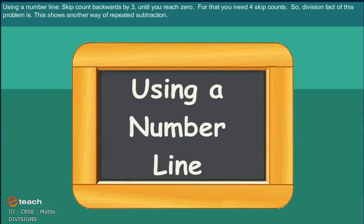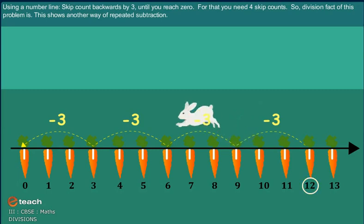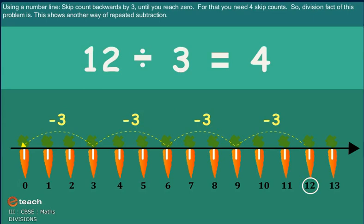Using a number line. Skip count backwards by 3 until you reach 0. For that, you need 4 skip counts. So the division fact of this problem shows another way of repeated subtraction.